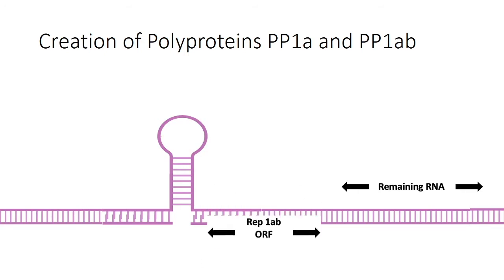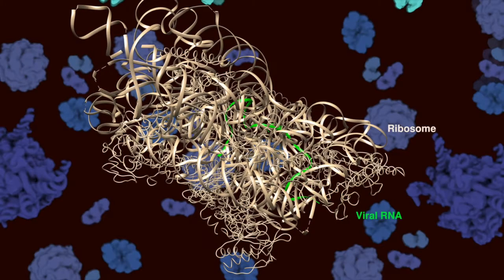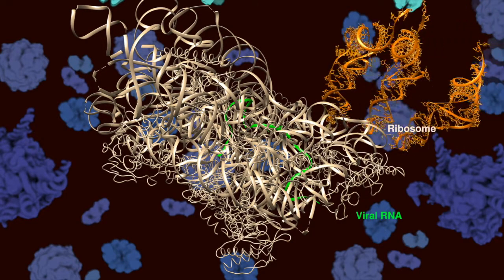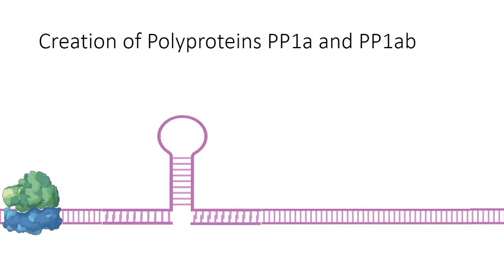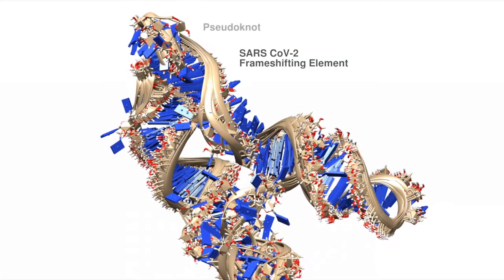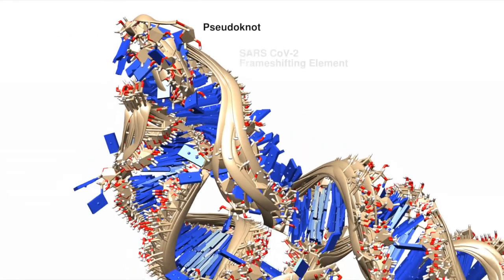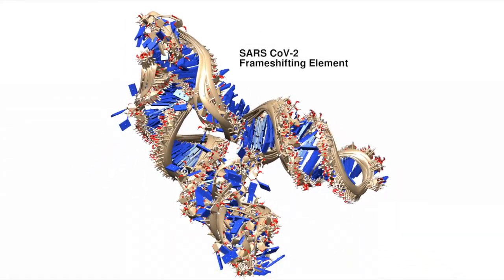The structure in the middle is called a pseudoknot. Let's zoom into the cell, where the host machinery translates the viral RNA to make the polyproteins. It encounters the pseudoknot at some point, and this decides the next course of action. This is the pseudoknot up close — the structure is called the frameshifting element, with the deciding knot at the top.